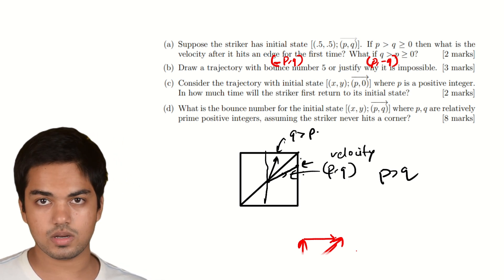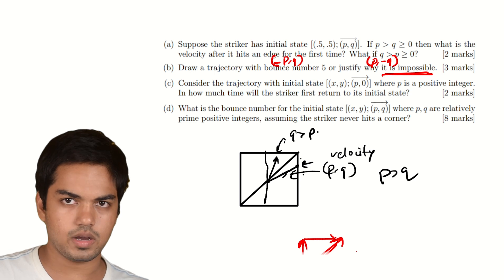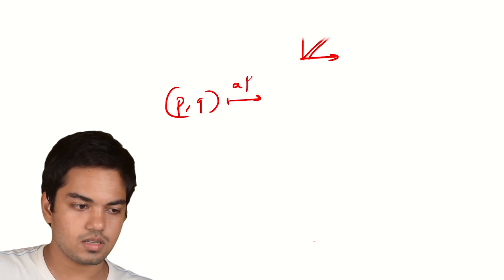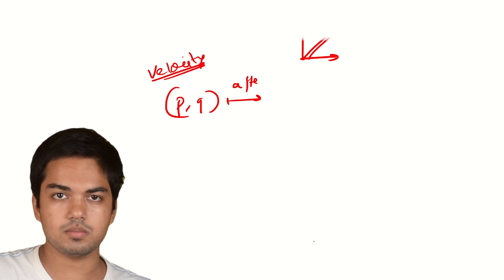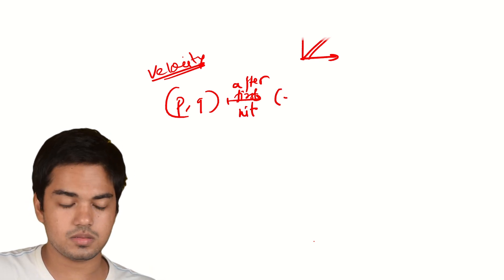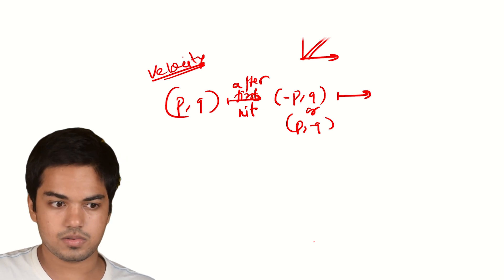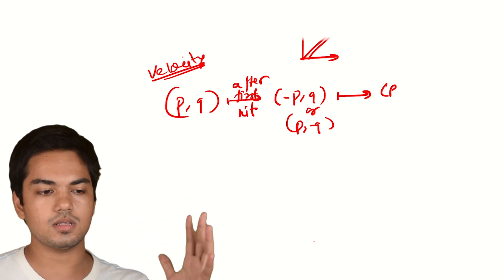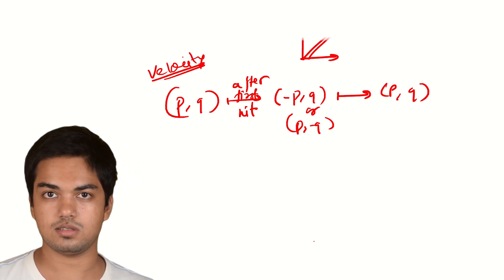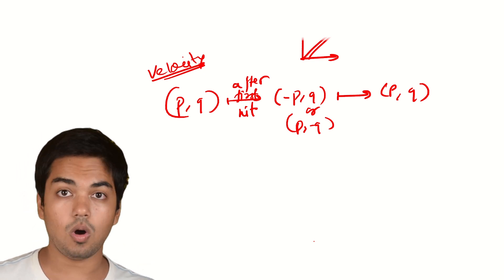The answer is that it's impossible. Each time the striker hits a wall, exactly one coordinate of the velocity flips sign. After an odd number of hits, there's been an odd number of sign changes, meaning at least one coordinate of the velocity will be the negative of what it started with — so it can never return to its initial state. Therefore, odd bounce numbers are not possible; the number of sign changes must be even to return to the original state.